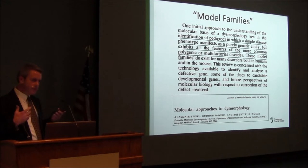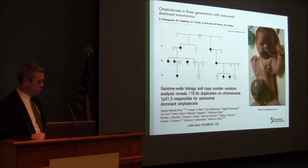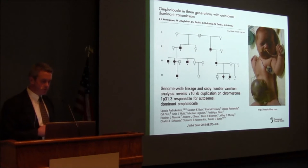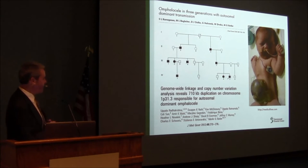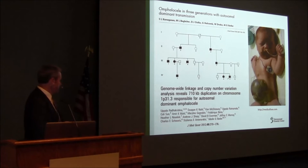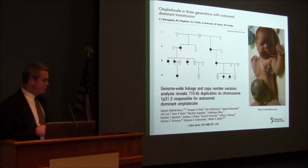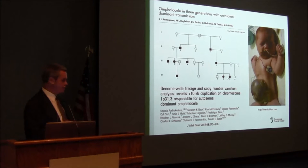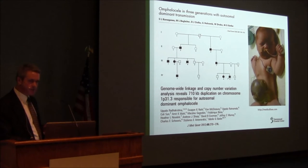Here is a family that Dr. Schwartz and I were involved with, reported in the early 2000s with autosomal dominant omphalocele — this would be considered a model family. We were involved at one stage of the process, and eventually through linkage analysis and microarray it was found that affected individuals had a duplication on chromosome 1. So this is an example of a family like this that could be very useful for understanding the cause of isolated omphalocele.